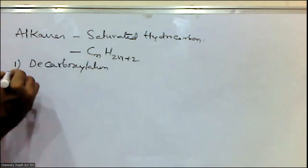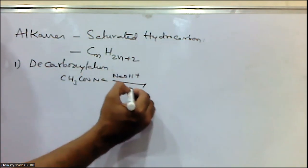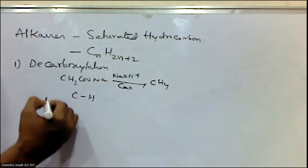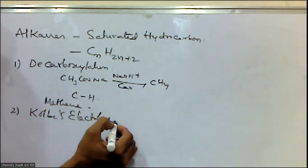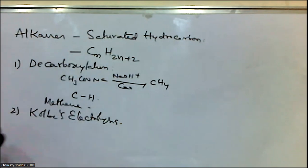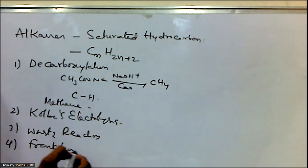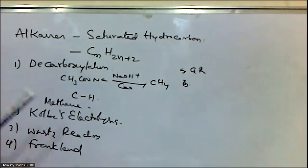In the previous video, preparation methods were discussed: sodium or potassium salts of carboxylic acids, Kolbe electrolysis, Wurtz reaction, Frankland reaction, preparation from Grignard reagent, Wolf-Kishner reduction, and Clemmensen reduction. Various methods were covered there.